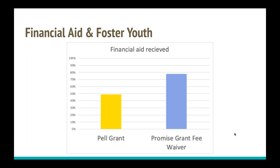We need to figure out how to make sure that foster youth are getting the support they need while they're in high school, while they're still in the child welfare system, to get that FAFSA done. Once they arrive at college, their financial aid should be in place, they've got everything they qualify for, and we're really starting them out in a place where they can be successful in college.